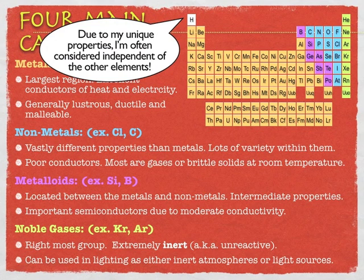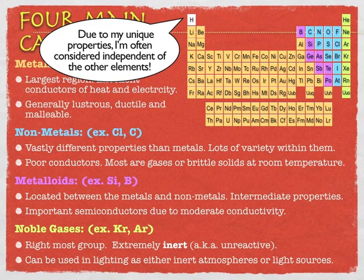Hydrogen is put above group 1. There are 18 columns in the periodic table, and hydrogen is placed above group 1 because it shares structural similarities — it has one valence electron. Some periodic tables actually put hydrogen above group 17 as well, because of the way it behaves. Hydrogen's placement is more of a structural thing; hydrogen is certainly not a metal.